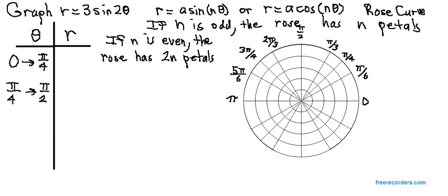Now, in our problem, n is 2, and since that's even, ours is going to be a four petal rose.